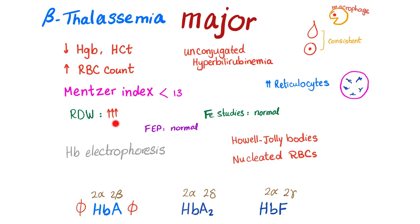Red cell distribution width. Iron studies normal, FEP normal. However, since there is hemolysis, we will get unconjugated hyperbilirubinemia from the protoporphyrin.